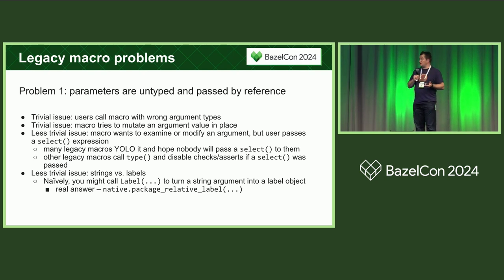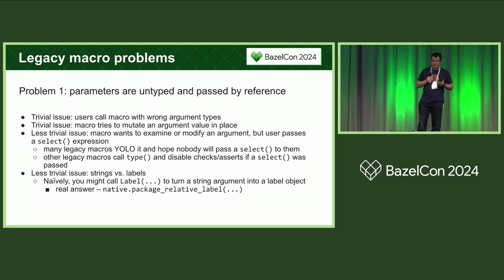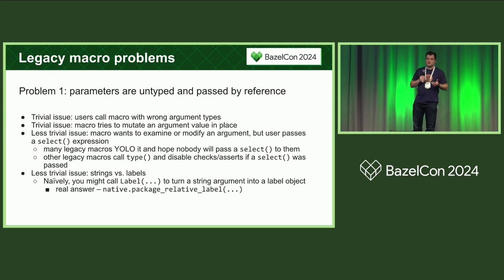Another less trivial issue: strings versus labels. If you are a legacy macro author and you want to transform a string into a label object — for example, to serialize it in some canonical format — you need to be very careful about the difference between the label constructor versus native.package_relative_label. In 99% of cases, what you want is native.package_relative_label, except for that 1% exceptional case. This is a common foot gun that many macro authors have encountered.